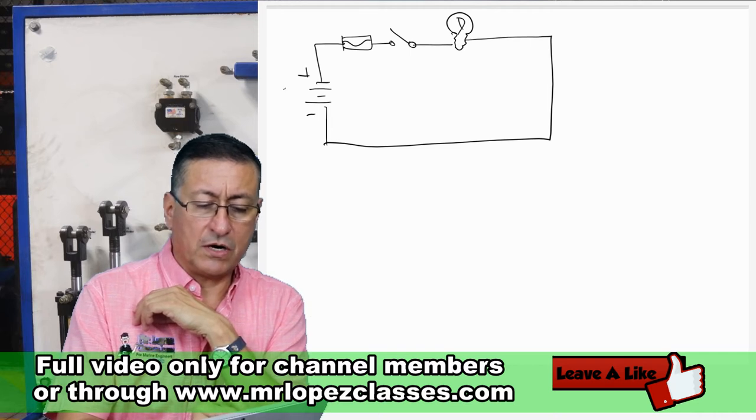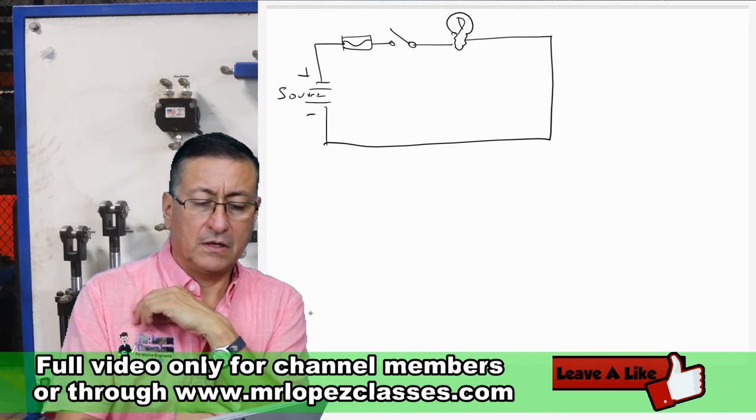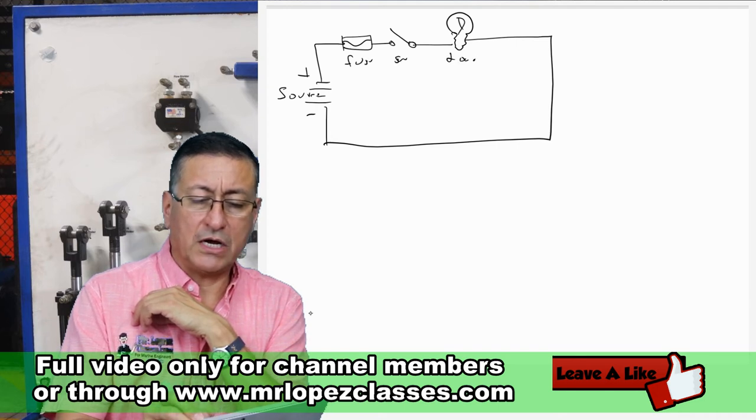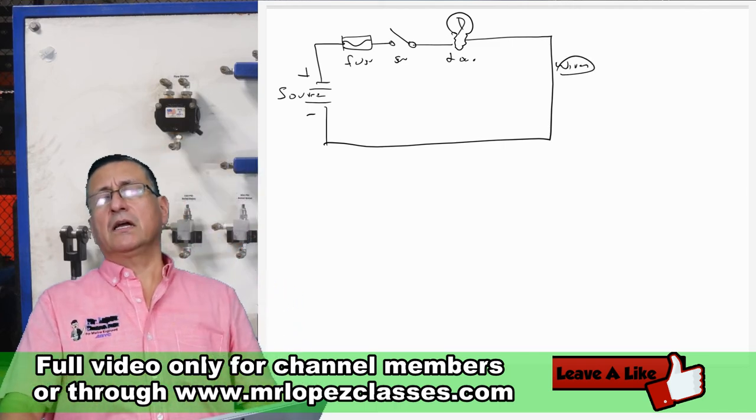And after that you return to the negative side of the system. This is the source of the power. This is the fuse. This is the switch. This is the load. And those are the wires. This is the electric system.